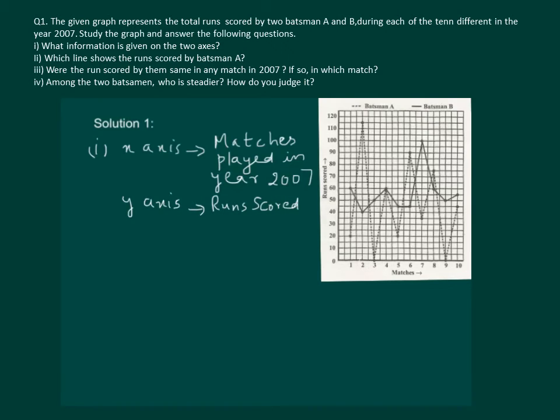Second part of our question reads that which line shows the runs scored by batsmen A. We have already seen that the dotted line shows runs scored by player A.